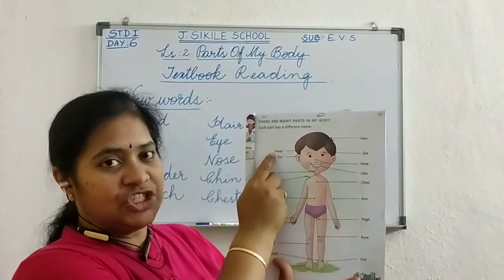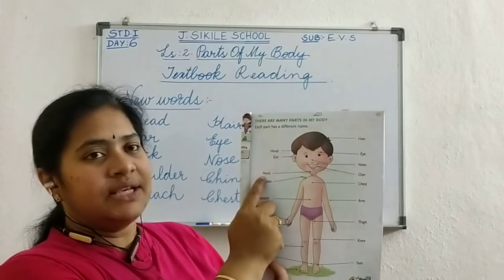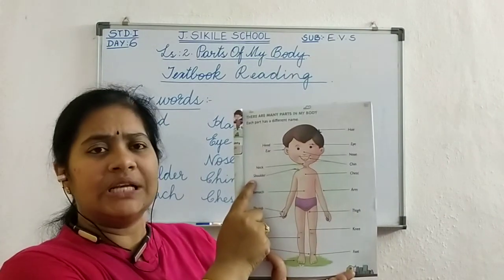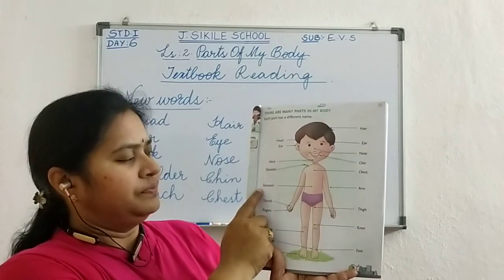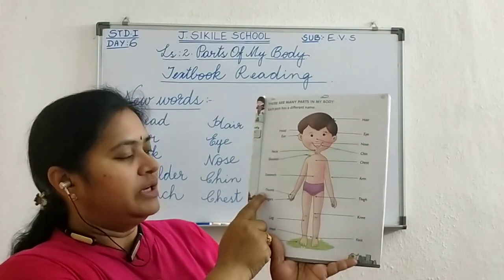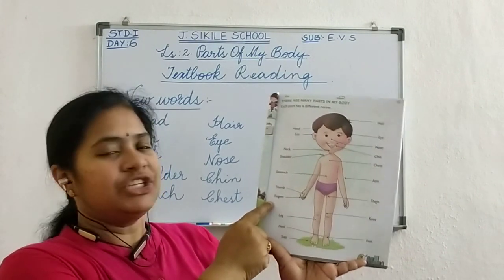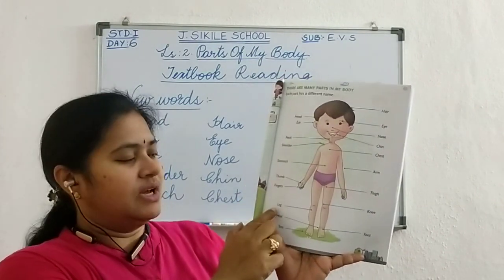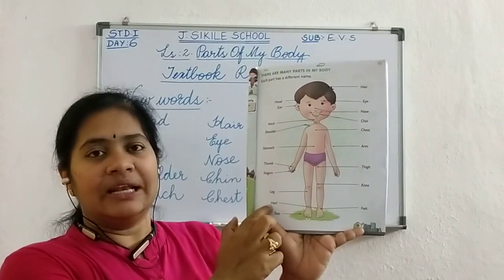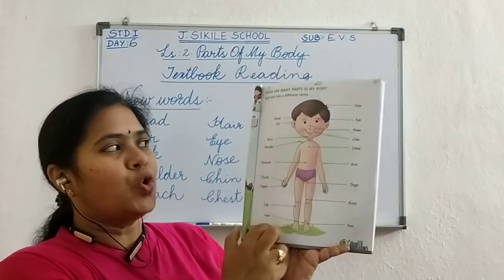Head — H-E-A-D. Head. E-A-R. Ear. N-E-C-K. Neck. S-H-O-U-L-D-E-R. Shoulder. S-T-O-M-A-C-H. Stomach. T-H-U-M-B. Thumb. F-I-N-G-E-R-S. Fingers. L-E-G. Leg. H-E-E-L. Heel. T-O-E-S. Toes.